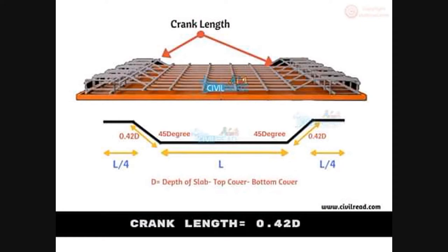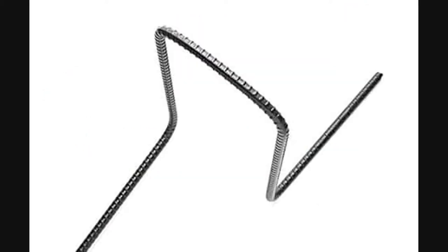250mm — we are going to form the structure. We are going to form up to 4 to 6 inches. When we have to bend, the crank will be 0.42 D — that is how many cranks are applied.